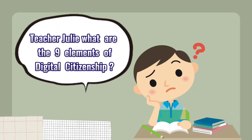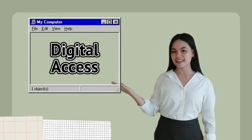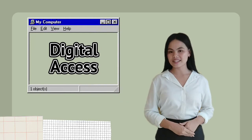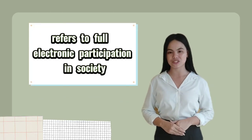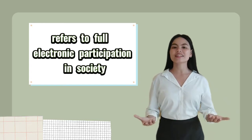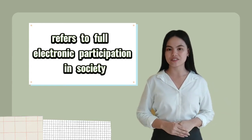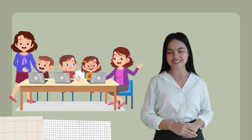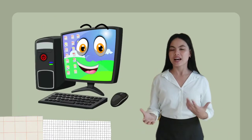The first element of digital citizenship is digital access. Digital access refers to full electronic participation in society. Inside the classroom, when we are integrating ICT-related topics, we must make sure that all students have equal access to digital tools like computers, digital cameras, and the internet, and also providing time and equipment for students with special needs, and making students aware of locations and resources that they can use inside the classroom.